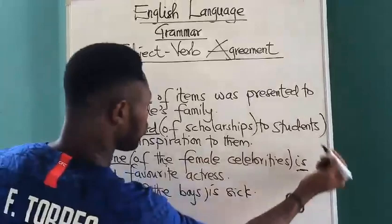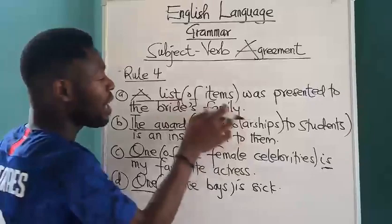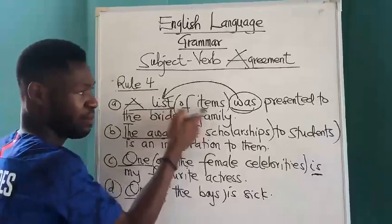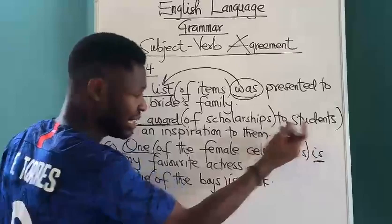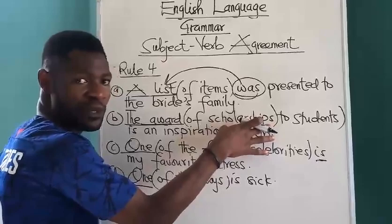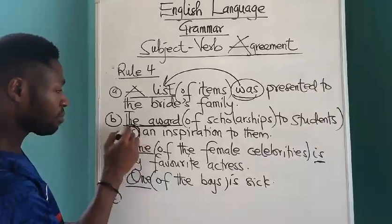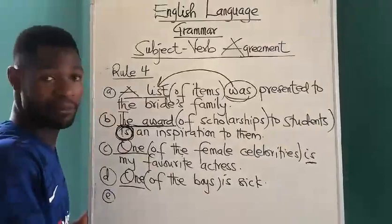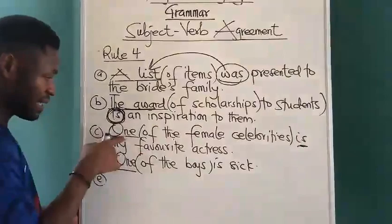'Award of scholarships' or 'a list of items' — a singular subject followed by a plural modifier like 'of items' takes a singular verb. You realize that here 'was', which is a singular verb, is agreeing with the singular subject 'list', not the plural modifier. 'The award of scholarships to students' — 'of scholarships' is a plural modifier, it shouldn't confuse you. The subject here is 'award', which is singular, therefore it should take a singular verb. 'One of the female celebrities is my favorite.'